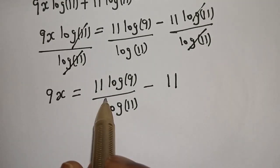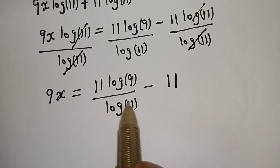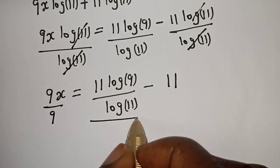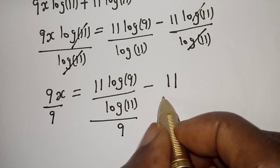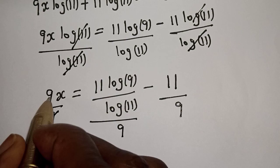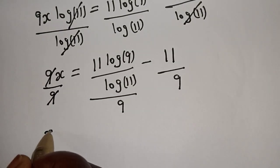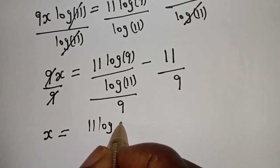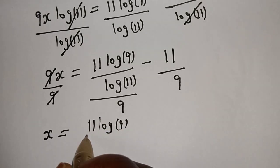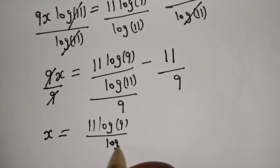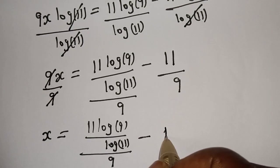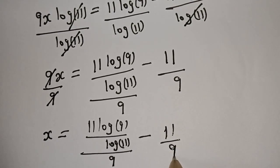We are looking for the value of S, so let's divide both sides by 9. This cancels, giving us: S is equal to 11 log 9 over log 11, all divided by 9, minus 11 divided by 9.